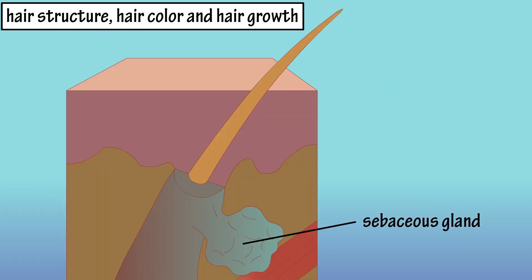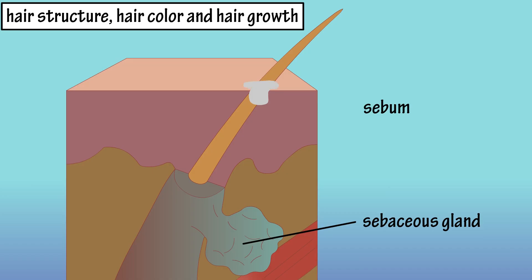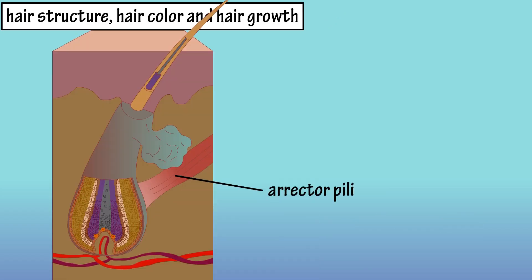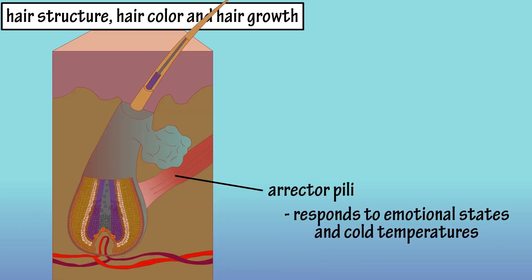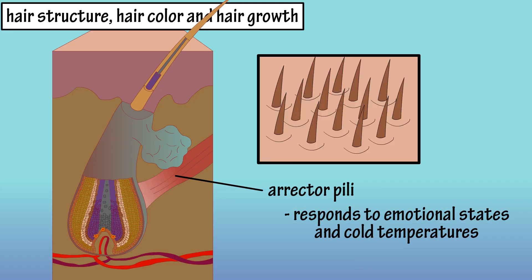The sebaceous gland mentioned earlier secretes an oily substance called sebum, which lubricates and conditions hair and skin, preventing it from becoming dry, brittle, or easily damaged. The erector pili muscle is activated as a response to an emotional state or cold temperatures. It pulls on the hair follicle, elevating the hair, producing goose bumps.